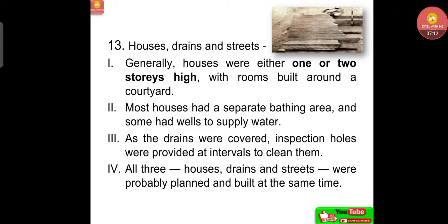Regarding houses, drains and streets: generally houses were either one or two stories high with rooms built around a courtyard. Most houses had a separate bathing area and some had wells to supply water. Drains were covered and inspection holes were provided at intervals to clean them. All three — houses, drains, and streets — were probably planned and built at the same time.